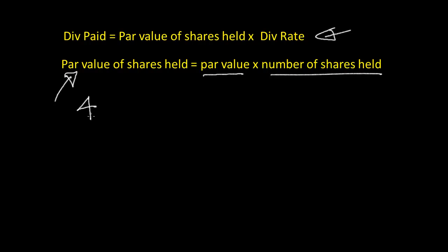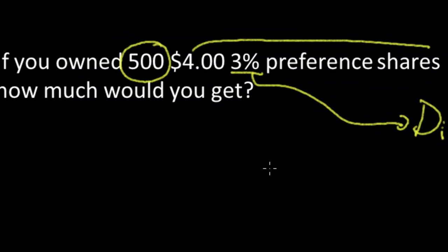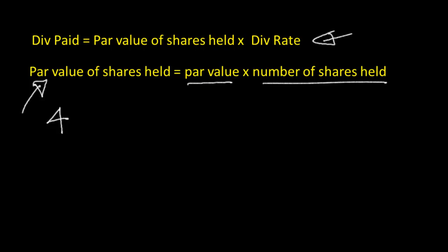Four-dollar par value, you own 500 shares, and it's the 3% rate. The par value of the shares held is going to be four dollars times 500. That means the par value of the shares that you own is $2,000.